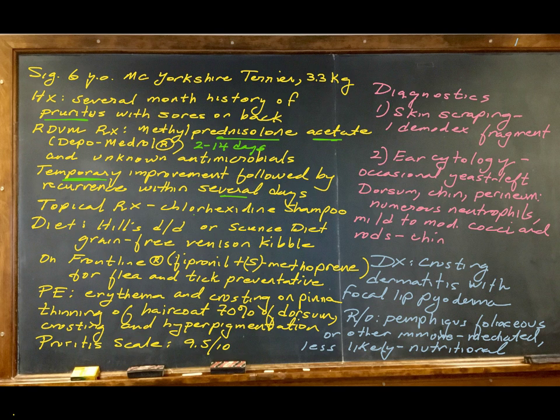The dog was also treated with topical chlorhexidine shampoo. Chlorhexidine is a biguanide cationic shampoo that is particularly good for topical use. It disrupts cell membranes and disrupts the respiration of bacterial cell contents and is particularly good for staph aureus. The dog was also tried on a variety of diets, for instance Hill's DD diet and Sienstein grain-free venison.